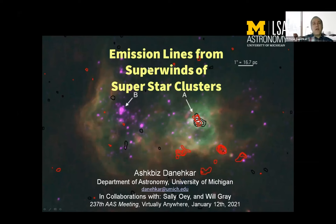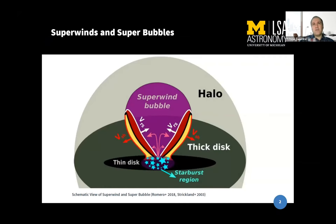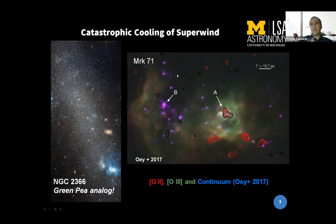Hello, good evening. Today I will talk about my recent hydrodynamic and photo-ionization results of the superwind simulation driven by superstar clusters. Superwinds and super bubbles are typically observed in starbursting galaxies. This superwind is driven by thermal and radiation feedbacks from OB associations and supernova explosions. In some of the starbursting galaxies, we see the separation of superwinds and also strongly radiative coolings, which cannot be explained clearly.